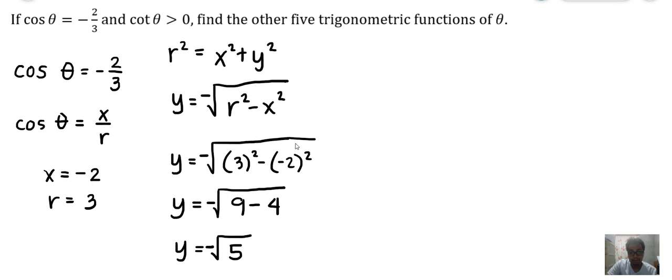Now we can write all the trigonometric functions of θ. Let's start with sin θ. Sin θ = y/r = -√5/3. Cosine of θ is already given as -2/3. Let's go with tan θ.